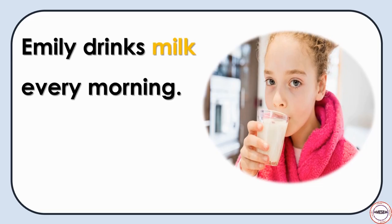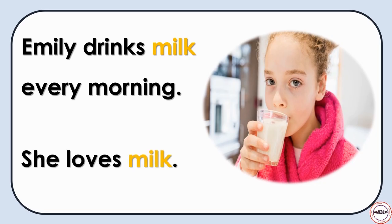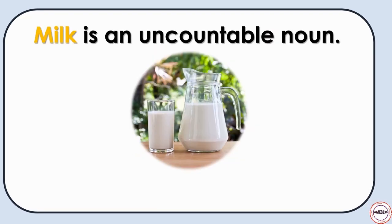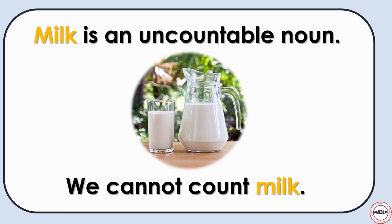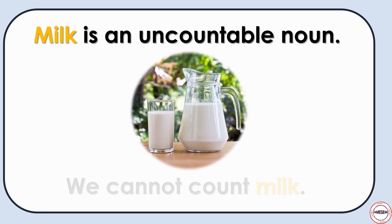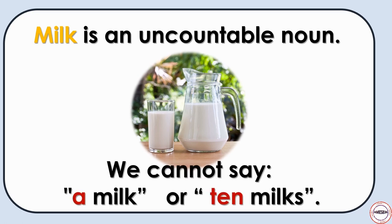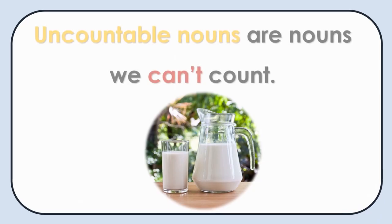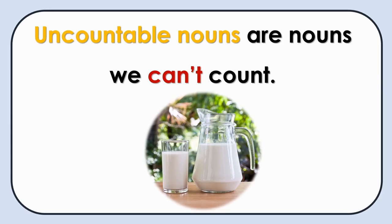Emily drinks milk every morning. She likes milk. Milk is an uncountable noun. We cannot count milk. We cannot say 'a milk' or 'ten milks.' Uncountable nouns are nouns we can't count. They are also called non-countable nouns, non-count nouns, and mass nouns.